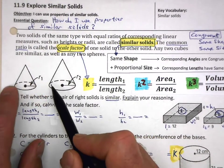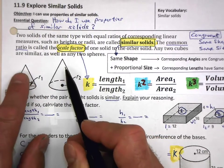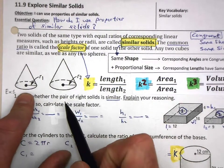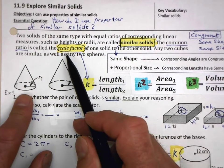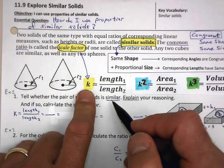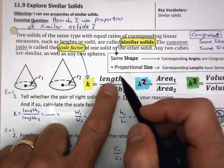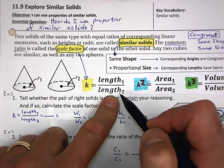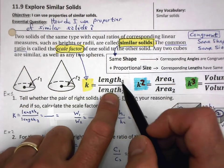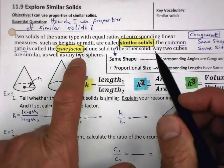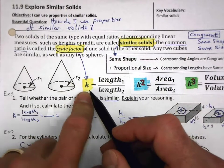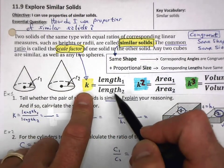Those principles we used with two-dimensional figures we can also use with solids. For example, these two circles are similar and have a particular scale factor. The scale factor is new over old — if the new one is bigger, that's an enlargement, and the scale factor would be greater than one.